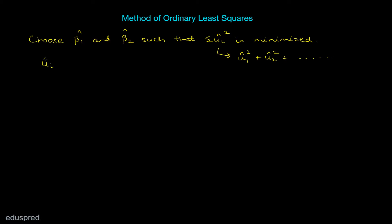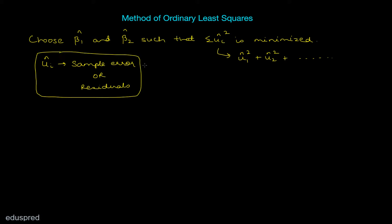This ui hat which we are calling sample error has one more name — we can also call it residuals. So the ui hat, which is the sample error, can also be called residuals. If you look at this expression, we are squaring the residuals and then summing them, and we do have a term for this expression: residual sum of squares.